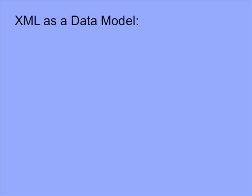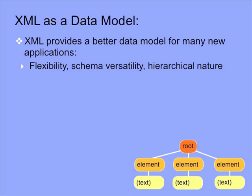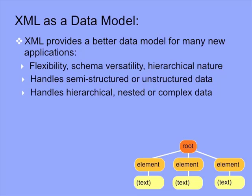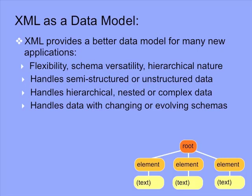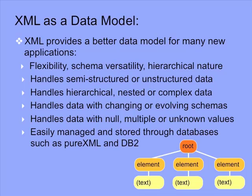Let's take a brief look at the XML data model. XML provides a better data model for many new applications because of its flexibility, schema versatility, and hierarchical nature. It handles semi-structured or unstructured data, for example, healthcare records, biological data, contracts, or insurance claims. It handles nested or complex data, for example, manuals, books, catalogs, bills, and land records. It handles data with changing or evolving schemas, for example, forms, changing industry standard documentation, as well as new product versions. It handles data with null, multiple, or unknown values, for example, phone numbers or patient records. It can also be easily managed and stored through databases such as PureXML and DB2.